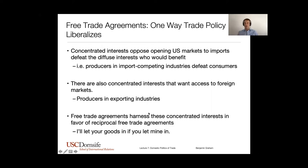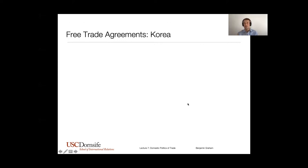What free trade agreements do is tend to be reciprocal — you let my products in, then I'll let your products in, a tit-for-tat kind of thing. That pits a concentrated interest versus a concentrated interest, because now you have export-oriented producers who really want access to foreign markets favoring a bilateral trade agreement, while a concentrated import-competing interest really opposes that agreement because they don't want foreign products in. Sometimes you see the export-oriented interest winning out because they also have consumers on their side — exporters plus consumers against import-competing industries — and the scale tips in favor of free trade.